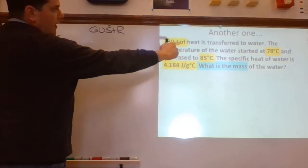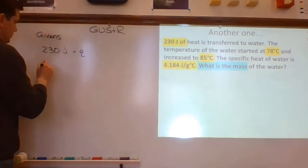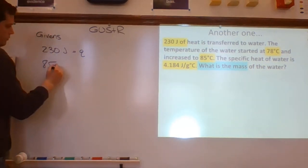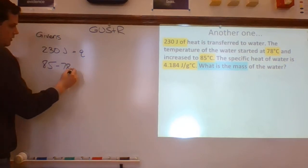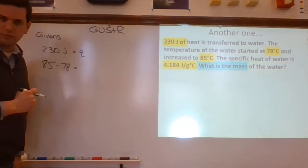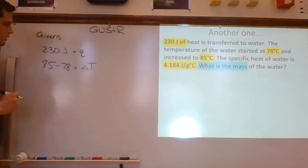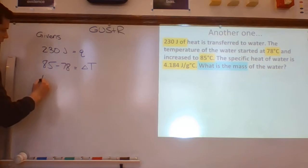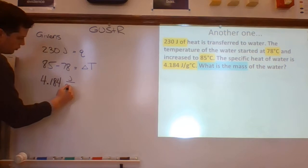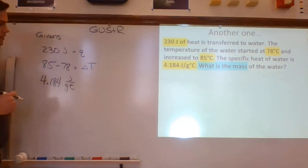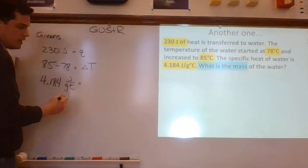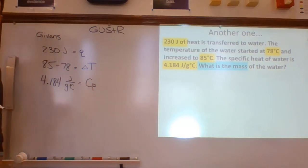Why don't I do 85 minus 78 since 85 is larger? 85 minus 78, that's equal to 7. I could just leave it that way though. It's fine. That's my delta T. Okay. I have 4.184 weird unit joules per gram degree Celsius. And that, again, not heat, is heat capacity. Cp. Great. I made a list of my givens. That's the G from the GUSTER.